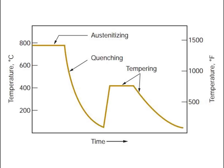There is a diagram showing temperature vertically — in both degrees Celsius and degrees Fahrenheit — and time horizontally. At around 800 degrees Celsius, austenitizing occurs, followed by rapid quenching. After rapid quenching, the temperature is increased again, and just below 400 degrees Celsius the tempering stage occurs. During tempering, slow cooling is performed.